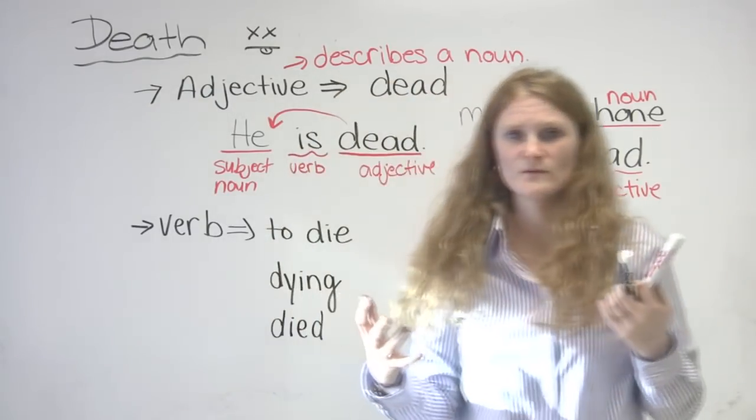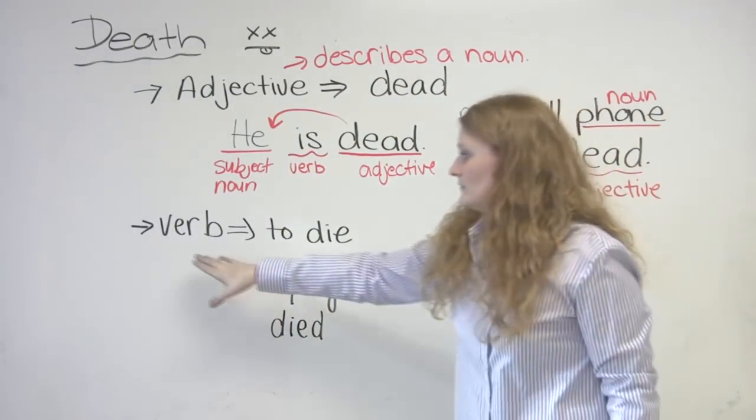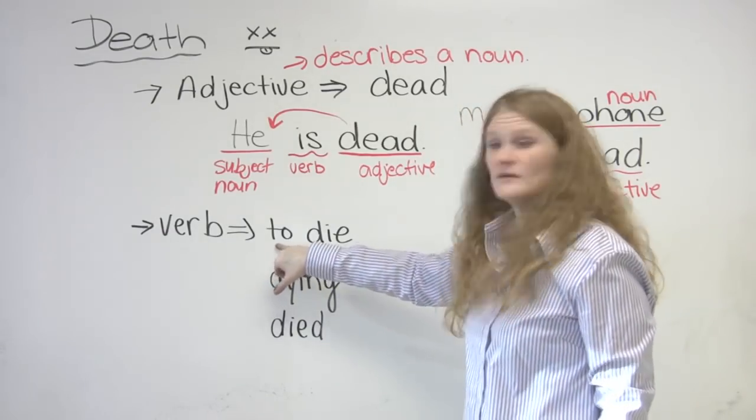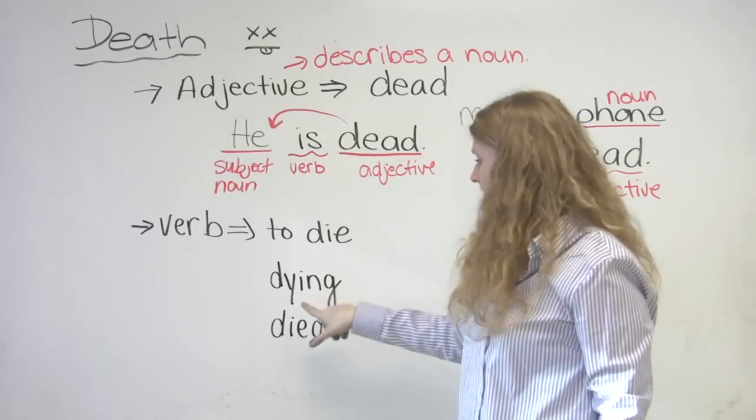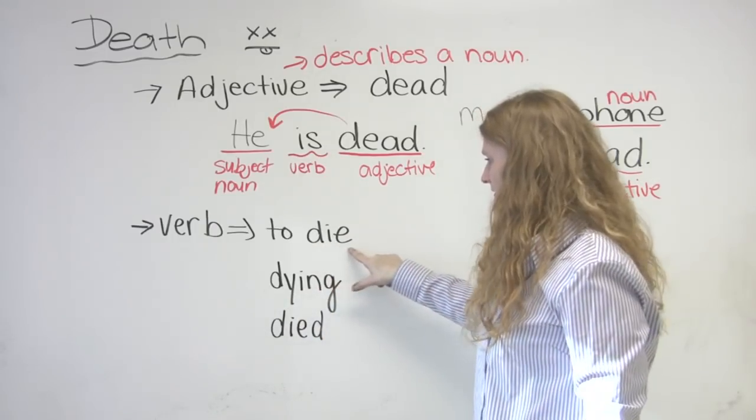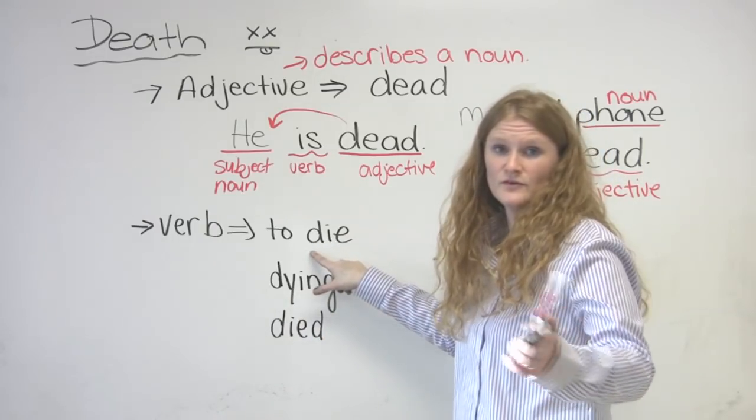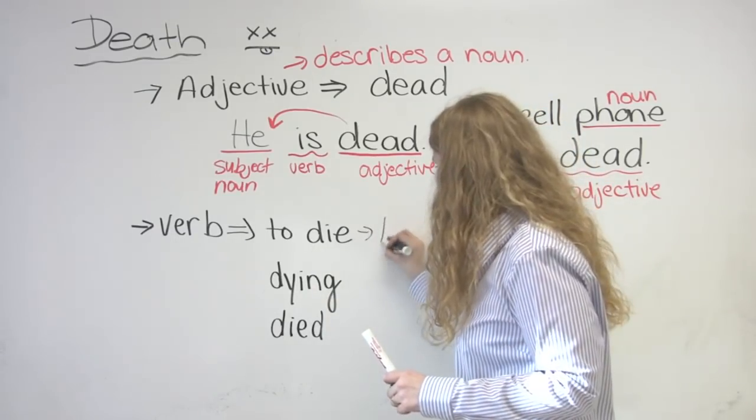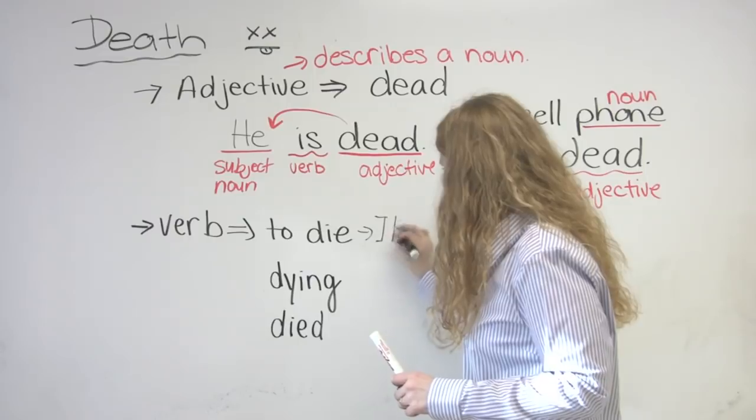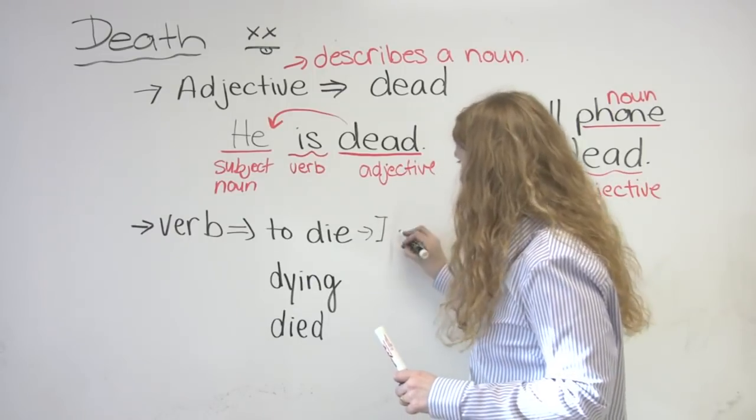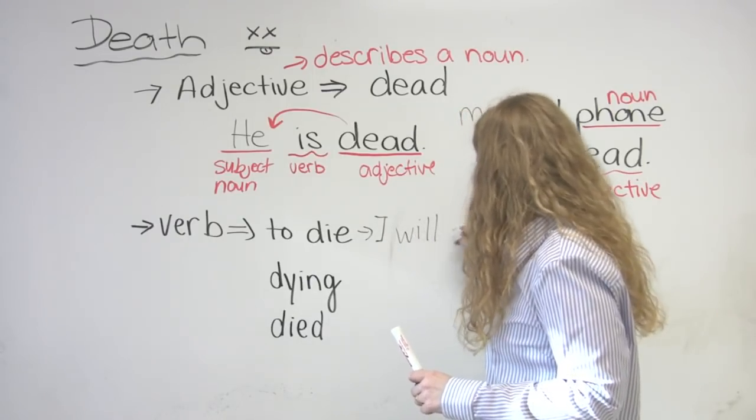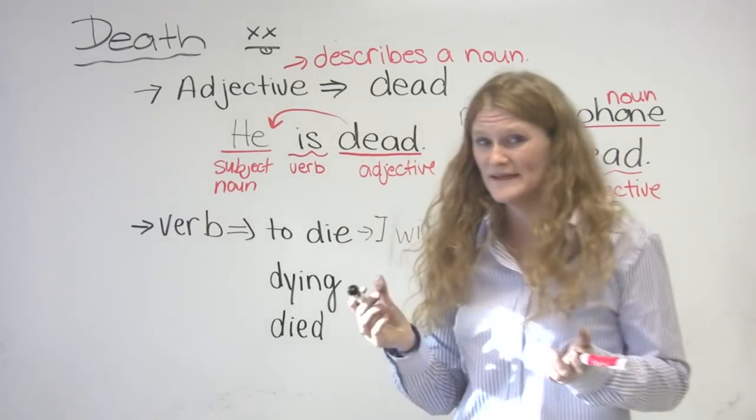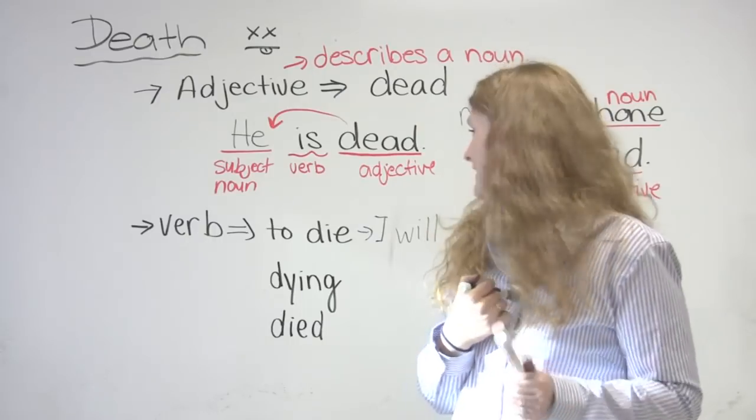The next way that we talk about death is to use the verb. The basic form of the verb is to die. This is the present. We can also use it for the future if we use will. For example, I know this: I will die. One hundred percent sure. I will die. I don't know when, but I am going to die.